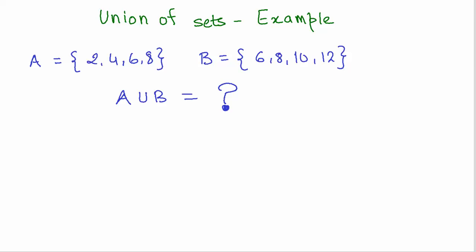Now let us look at a simple example. We have a set A given to us as a collection of even numbers: 2, 4, 6, and 8. Set B is again even numbers: 6, 8, 10, and 12. We are supposed to find A union B.